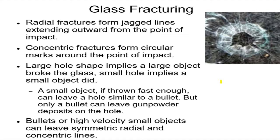Bullets can go through glass too. You can't really tell the difference between a bullet and a tiny pebble going through glass just by the hole — they both leave a small hole. But bullets can often leave gunpowder deposits as the bullet streaks and scrapes through, whereas a pebble won't. When they're really high-velocity objects, they can also leave what they call a symmetric pattern, like this — so this was made by a high-velocity object.